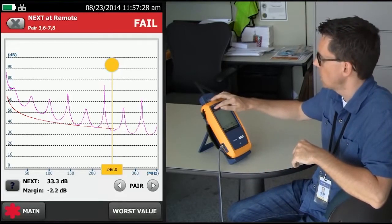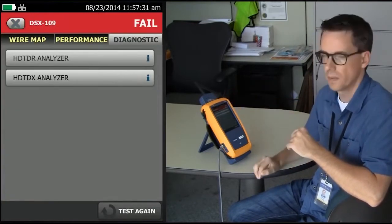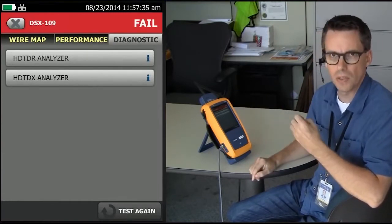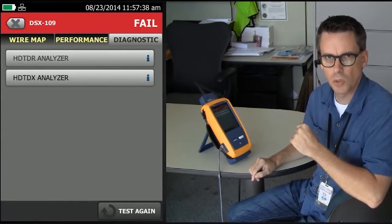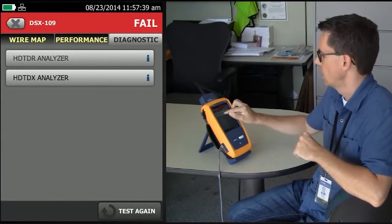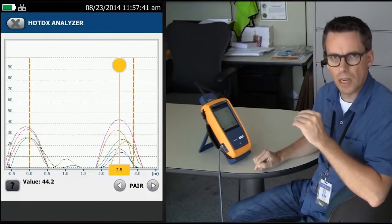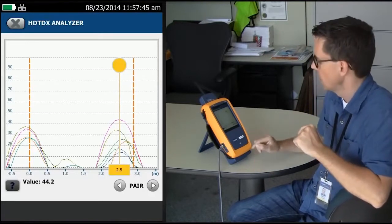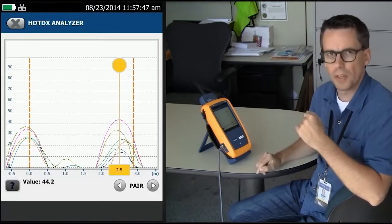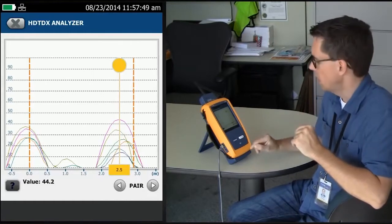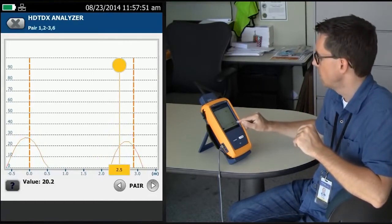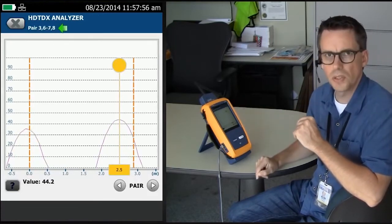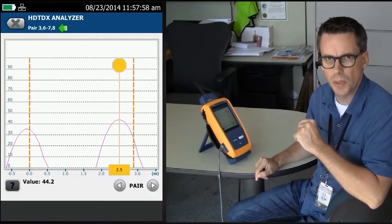Now what I want to do is go back to the home screen and to my diagnostic tag and look at the HDTDX, that's the High Definition Time Domain Crosstalk Analyzer. This is now allowing me to look down the cable and see where the crosstalk is happening. And I only want to do it for that 3678, the worst performing pair. So I'm going to tap until I see 3678 in the top left-hand corner there.